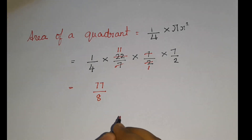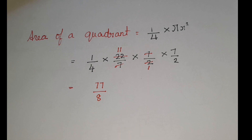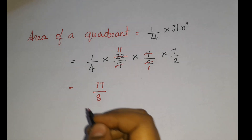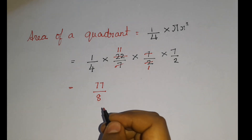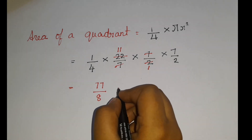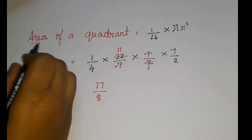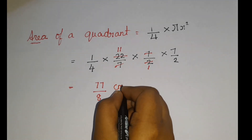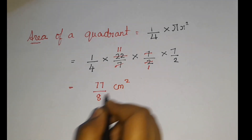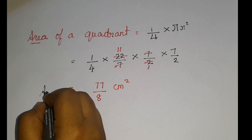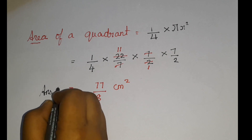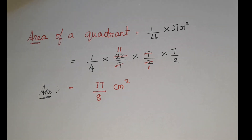You can just leave the answer right here, since in this chapter we do it like that. If you want to solve it further you can, otherwise leave the answer here. Since we found the area, let us write centimetres squared. So this is our answer: 77/8 cm².